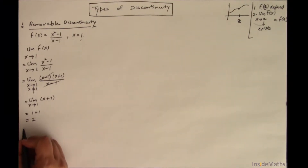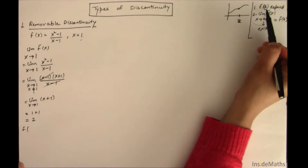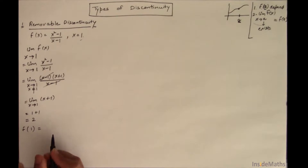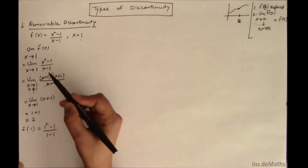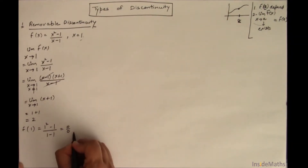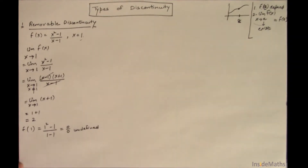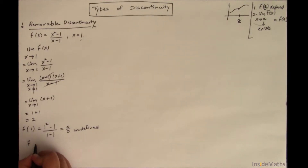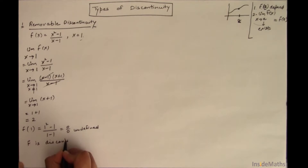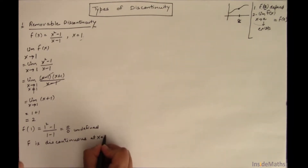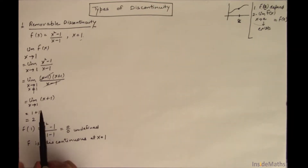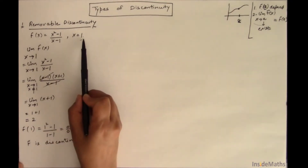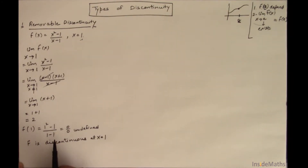The limit exists and equals 2. Now for the second condition, I'll find f(1) = (1² - 1) / (1 - 1) = 0/0, which is undefined. Because both conditions are not satisfied, the function is discontinuous at x = 1. Since the limit exists but the function is not defined at that point, this type of discontinuity is called removable discontinuity.